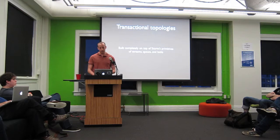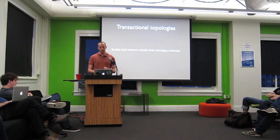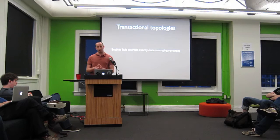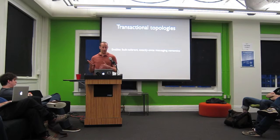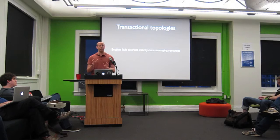The cool thing about transactional topologies is it's not really a feature of Storm — it's actually a higher-level abstraction built on top of Storm's primitives of streams, spouts, and bolts. What transactional topologies allow you to do is get fully fault-tolerant exactly-once messaging semantics. It's not exactly-once processing, because ultimately if you have a failure you have to replay something, but on top of the at-least-once guarantee you can build exactly-once semantics — build your application such that even though it's replaying, it was like you only processed it once.